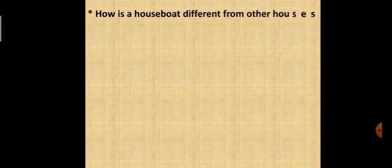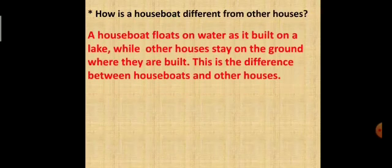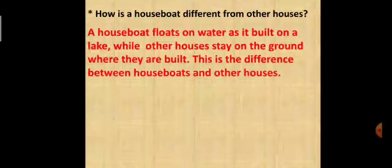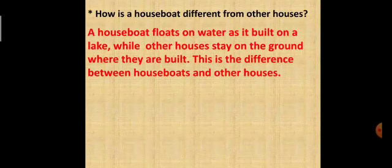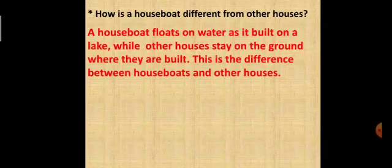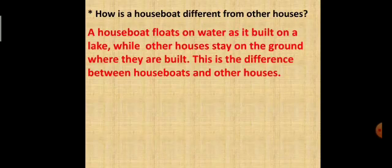Now, see in your textbook, some questions are given. So let's see. First question is, how is a houseboat different from other houses? So answer is, a houseboat floats on water as it is built on a lake while other houses stay on the ground where they are built. This is the difference between houseboats and other houses.